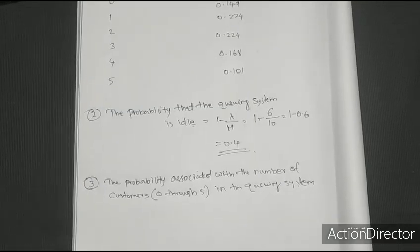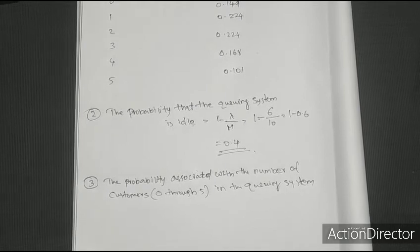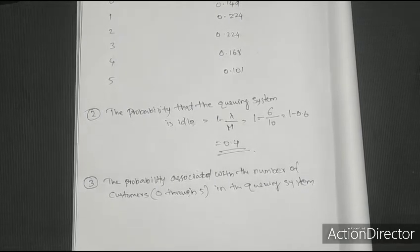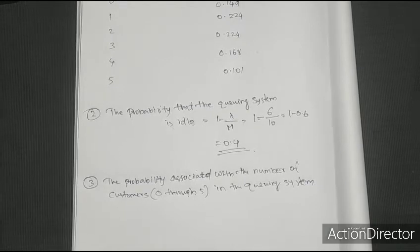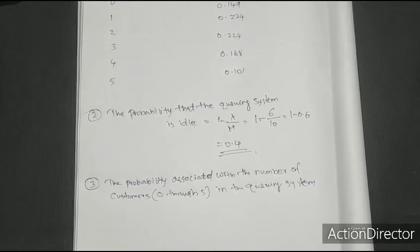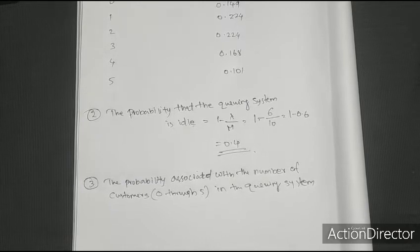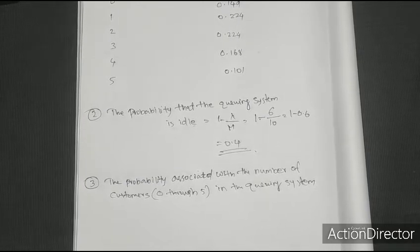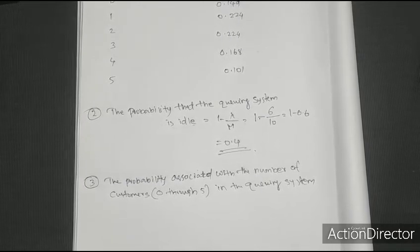The third question asks for the probability associated with the number of customers from 0 through 5 in the queuing system. We calculate Pn for n from 0 to 5 in the queuing system.